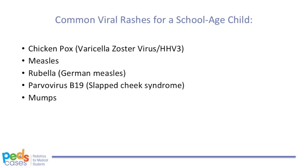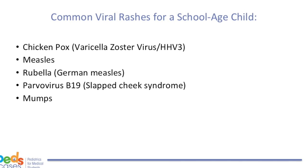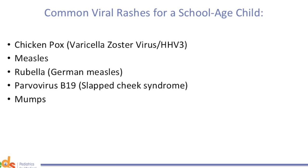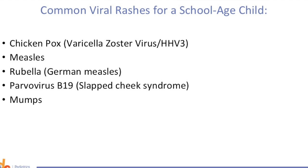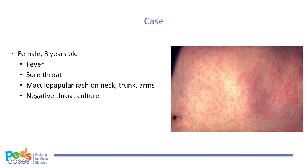Now we will change demographics slightly to consider a school-age male or female presenting with a rash. Some common viral rashes to consider are chickenpox, measles, rubella, parvovirus B19, and mumps. Consider this situation: while working at a family medicine clinic, one of your patients is an 8-year-old girl whose parents say she has a fever and sore throat. She presents with a red rash on her neck and upon further physical examination has a maculopapular rash over her trunk and arms. You take a throat culture, which is negative. It is possible to obtain a blood sample for viral serology, which could indicate measles, rubella, or B19 if positive, but realistically this would only be done if the child was quite unwell. Let's go through five common viral causes of a rash in this age group and consider some of the defining characteristics.